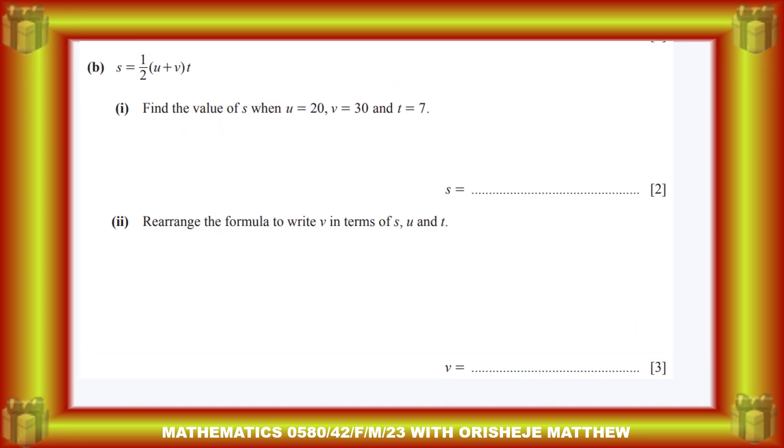Question 5b: we have given this expression s = ½(u + v)t. Find the value of s when u = 20, v = 30, and t = 7. So that is substitution into the formula. If we substitute, where you have u, you put 20; where you have v, replace it with 30; then t, replace it with 7. For this successful substitution, you have the first one mark.